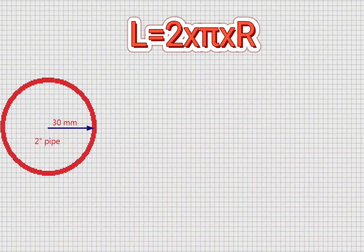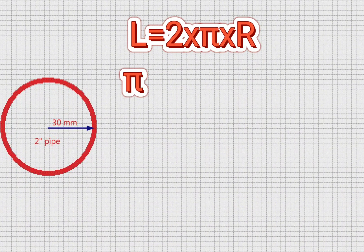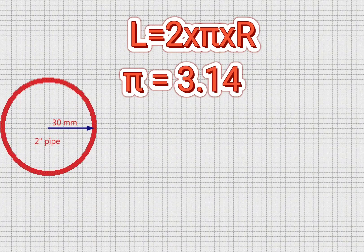Then we calculate the length of the circumference of the pipe and draw it. We calculate the length of the circumference with this formula: L equals 2 multiplies pi multiplies R. The value of pi is approximately 3.14.